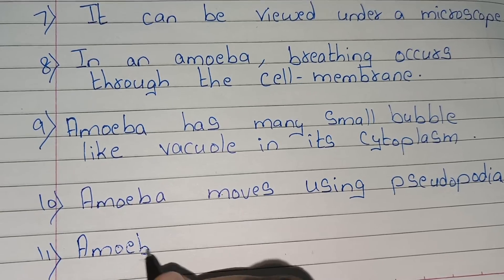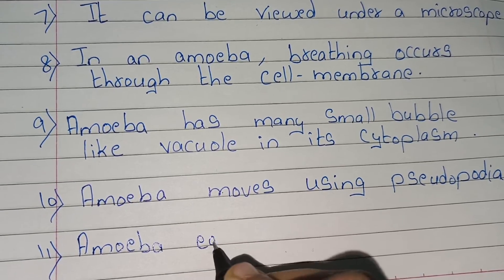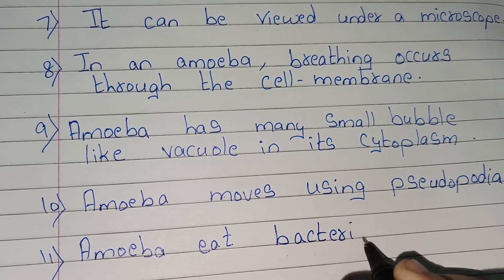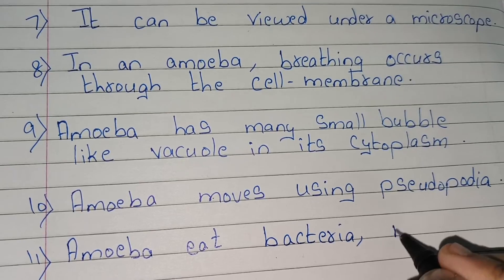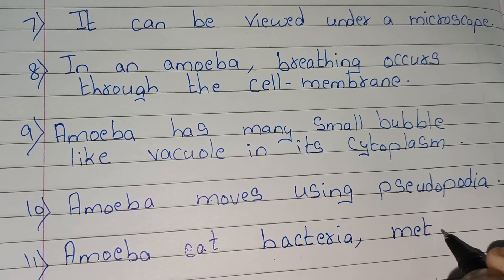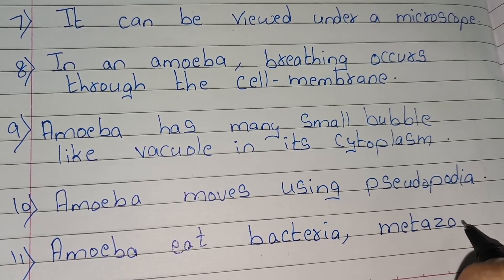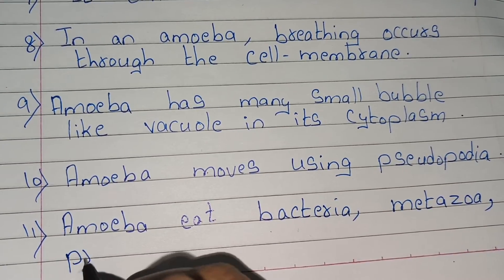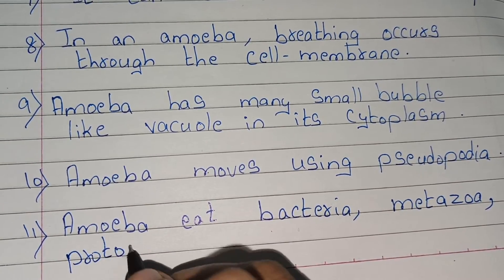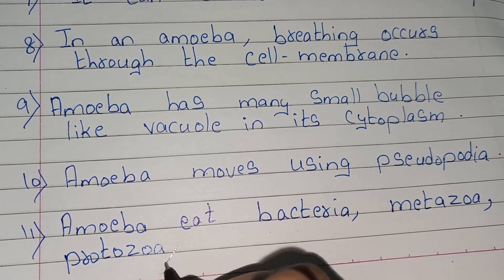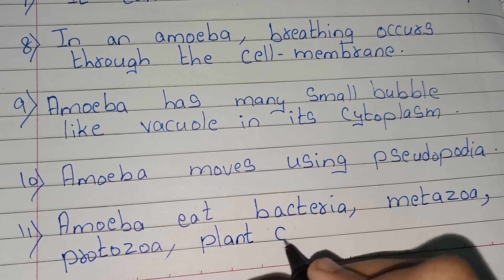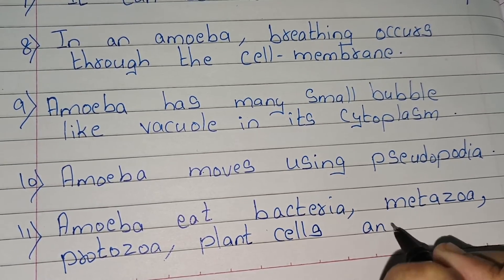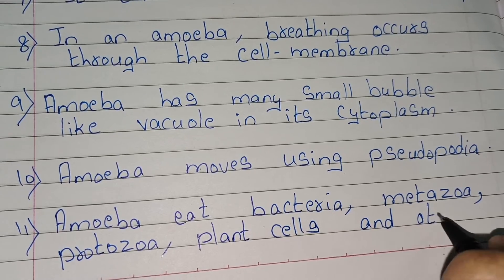Last point but not least, amoeba eats bacteria, metazoa, protozoa, plant cells and other organisms.